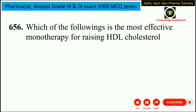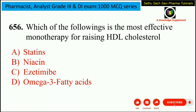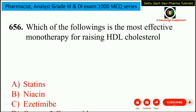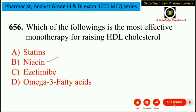Which of the following is the most effective monotherapy for raising HDL cholesterol? Is it statins, niacin, ezetimibe, or omega-3 fatty acids? Niacin, or vitamin B3, also known as nicotinic acid, is the most effective monotherapy for raising HDL (high-density lipoprotein) cholesterol levels. It works by increasing HDL production, which helps remove excess cholesterol from the blood and transport it to the liver for excretion. So option B, niacin, is the answer.